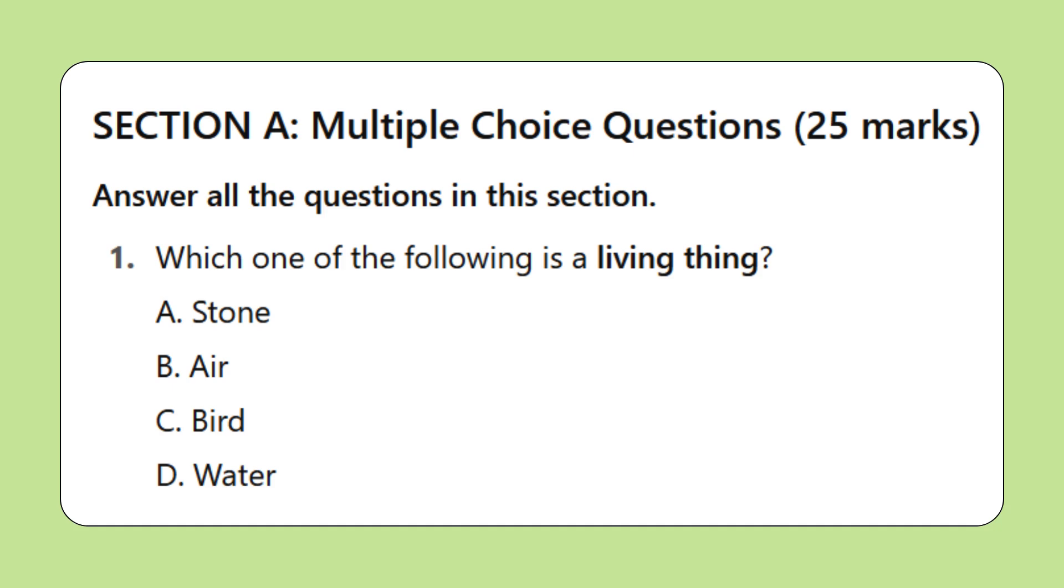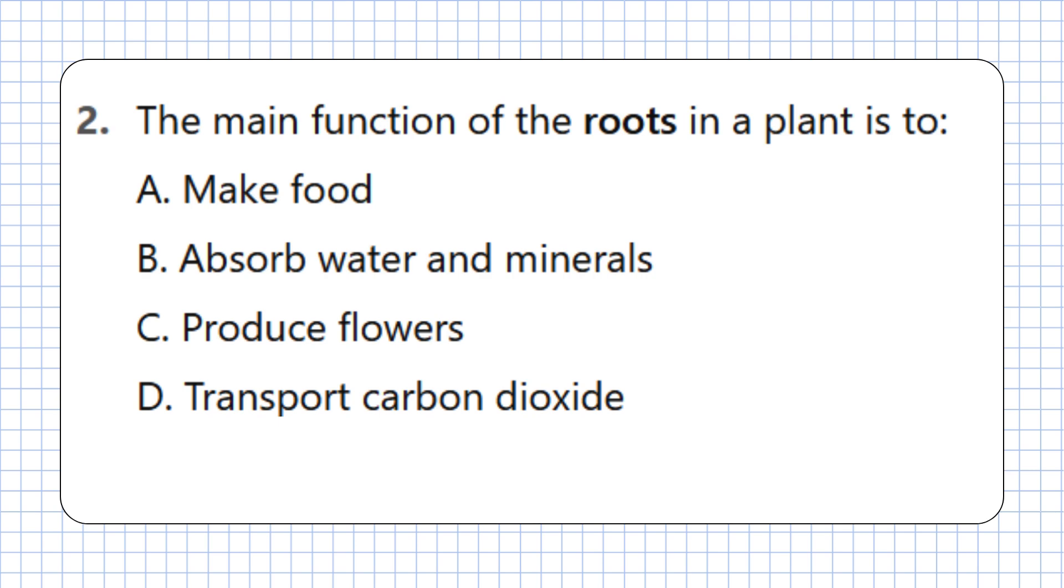Section A: Multiple choice questions, 25 marks. Answer all the questions in this section. Question 1: Which one of the following is a living thing? A. Stone, B. Air, C. Bird, D. Water. Question 2: The main function of the roots in a plant is to: A. Make food, B. Absorb water and minerals, C. Produce flowers, D. Transport carbon dioxide.